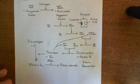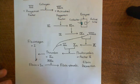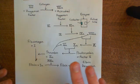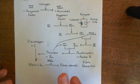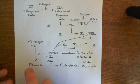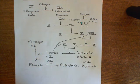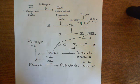This completes the intrinsic coagulation cascade. In the next video, we'll look at the extrinsic coagulation cascade — another pathway which can also lead to the conversion of fibrinogen into fibrin, but instead of being activated by collagen, it is activated by tissue factor.